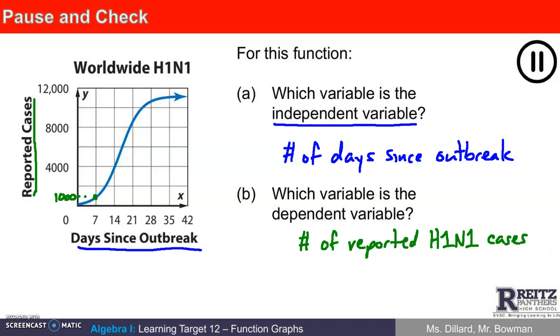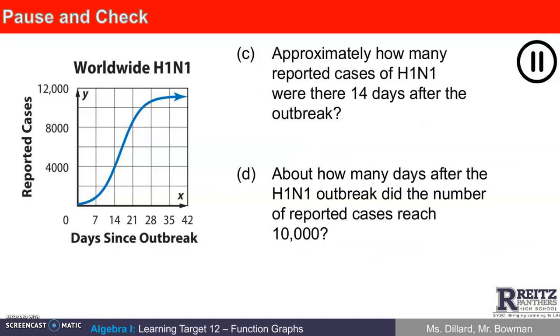Okay, here comes part two of the pause and check now. Okay, here it is. Part C says approximately how many cases of H1N1 were reported 14 days after the outbreak? And then part D says about how many days after the H1N1 outbreak did the number of reported cases reach 10,000? Hit pause, see if you can answer both. And then when you think you've got it, hit play.